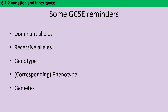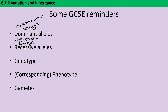A dominant allele is an allele that is always expressed, even in the heterozygote. Whereas a recessive allele is only expressed in a homozygote — only expressed if there are no other alleles present. We can differentiate between these using different case letters: a capital letter for a dominant allele and a lowercase letter for a recessive allele.